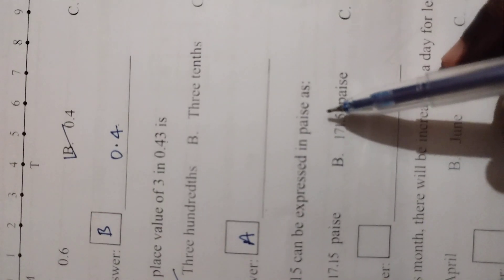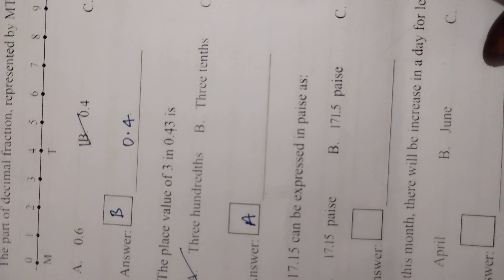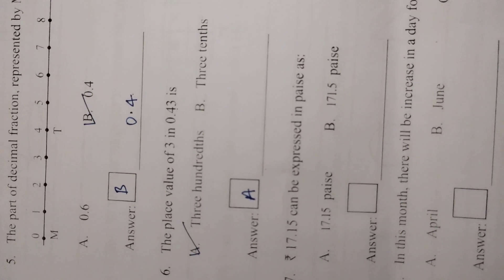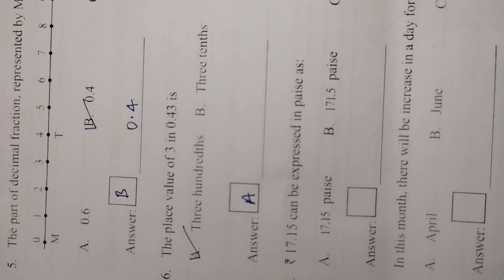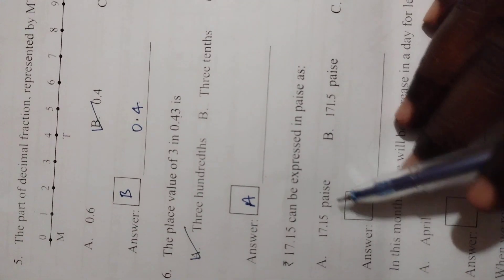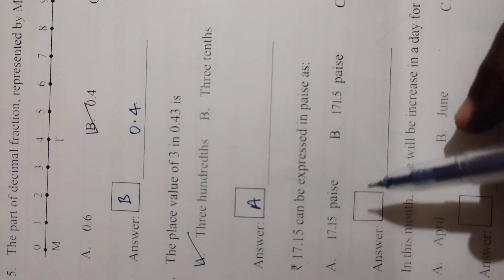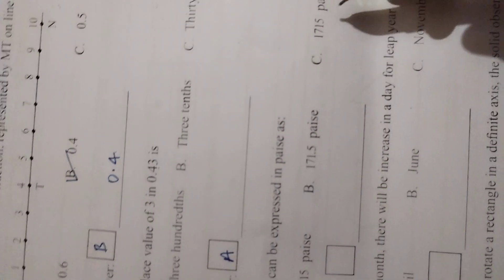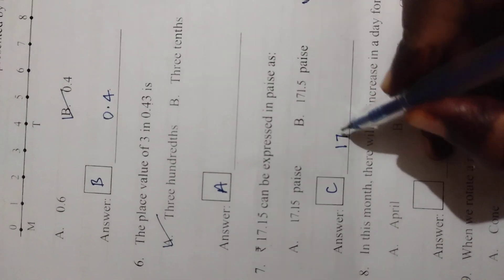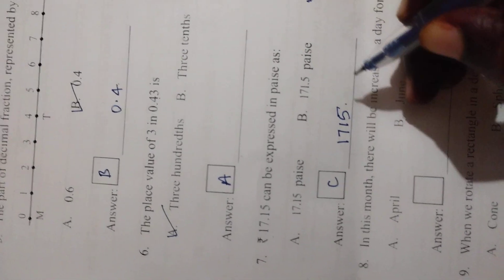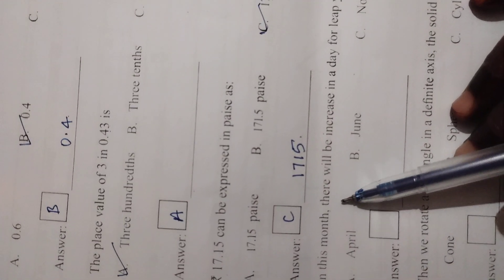Next, rupees 17.50 can be expressed in paise. 1 rupee equals 100 paise. You can write together: 17 rupees plus 50 paise means 1750 paise. Answer: 1750 paise.